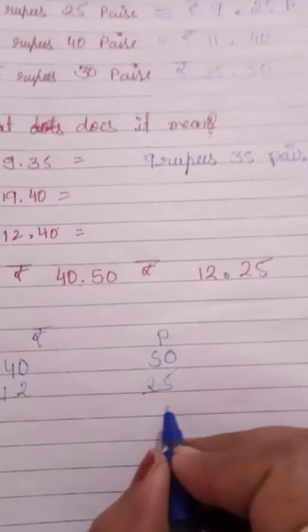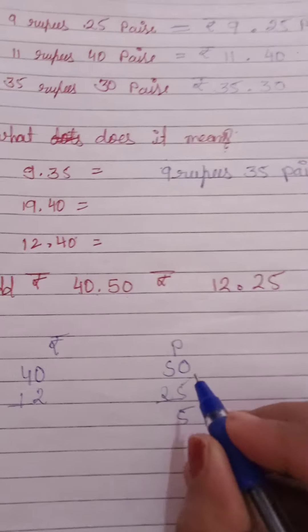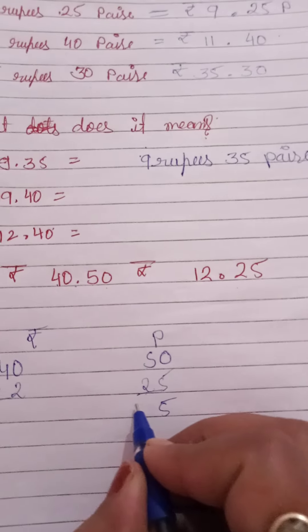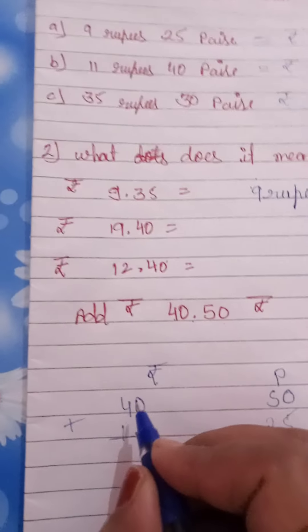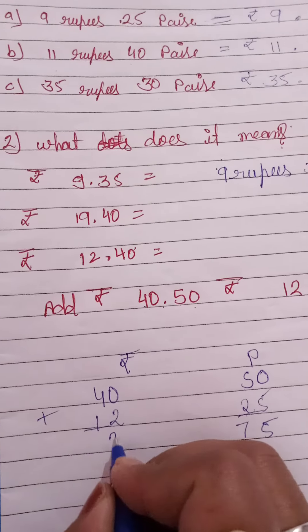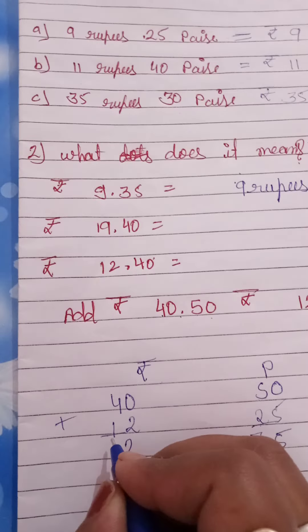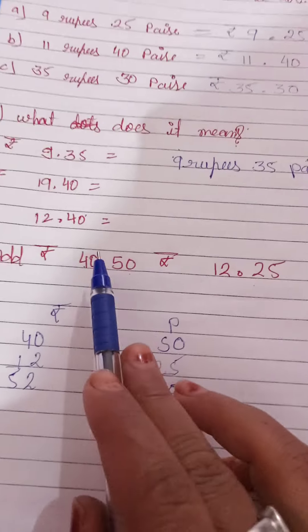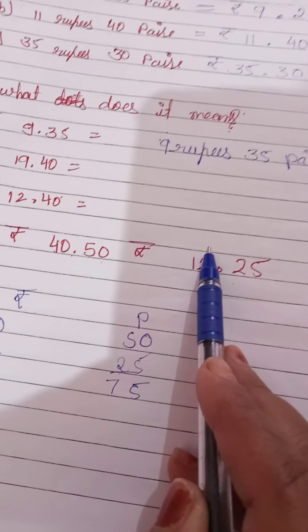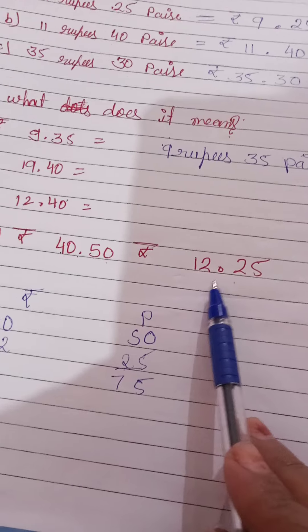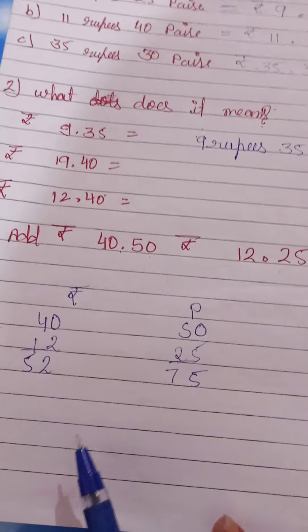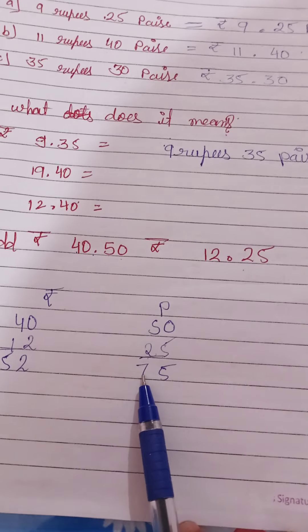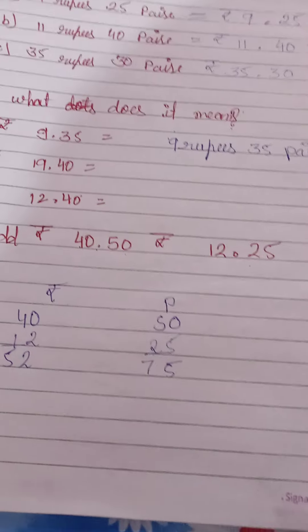We will add very easily because we have arranged and we have added very well. So 5, 0 plus 5 is equal to 5. Now 5 plus 2 is 7. 0 plus 2 is 2 and 4 plus 1 is 5. Now let us know that rupees 40.50, 12.25, when we add, what will we have? Rupees 52.75. Understood?